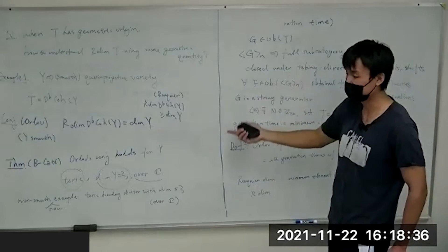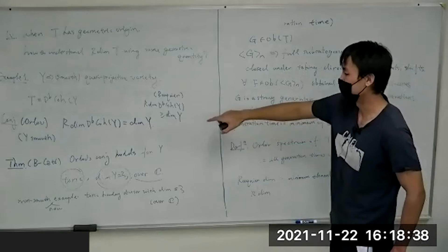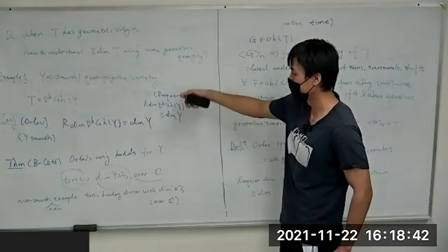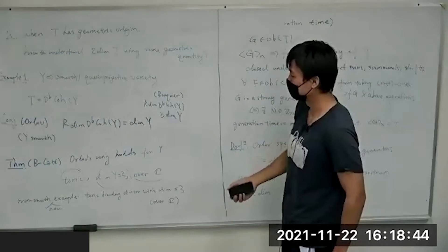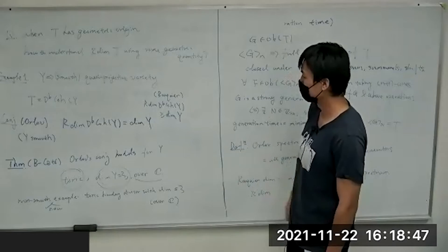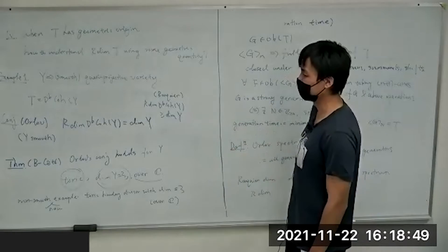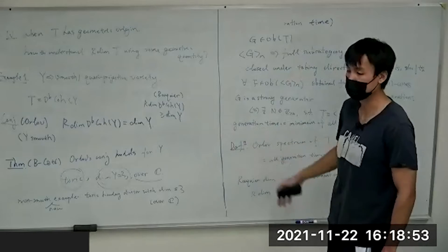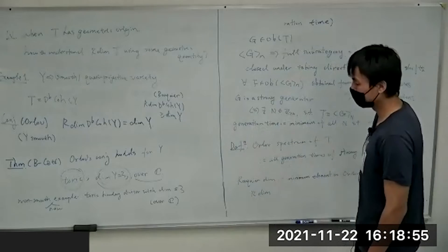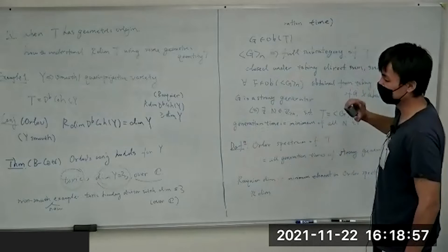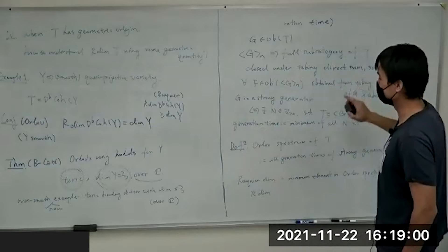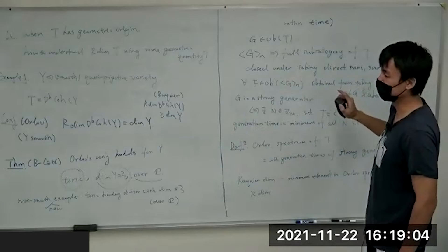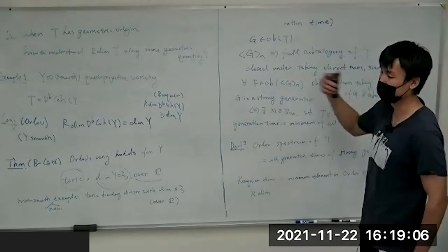The statement of our theorem is insensitive to that kind of explicit construction of a generator — it's really proven via mirror symmetry. It's about translating this upper bound: if the variety Y has some kind of mirror given by some symplectic manifold, we have a flexible way of bounding the Rouquier dimension from above, and use mirror symmetry to draw conclusions on the algebraic side.